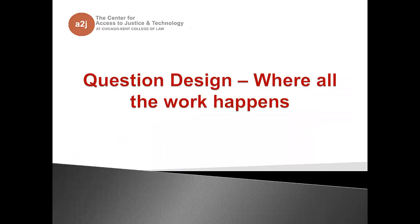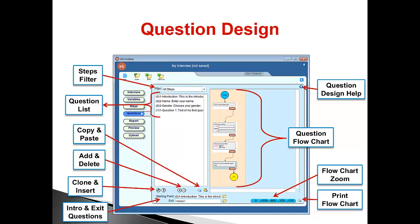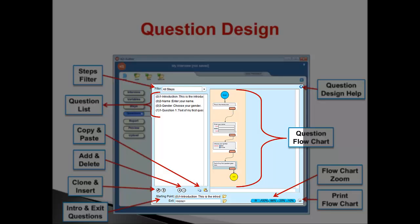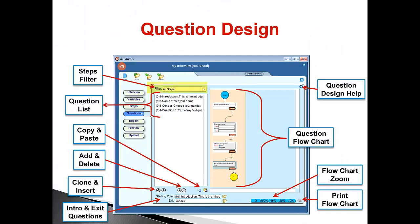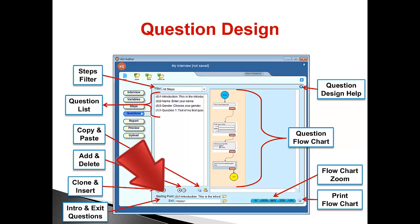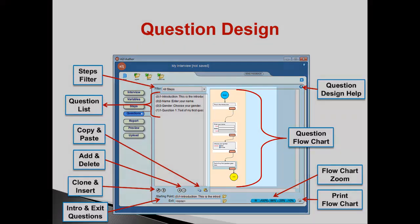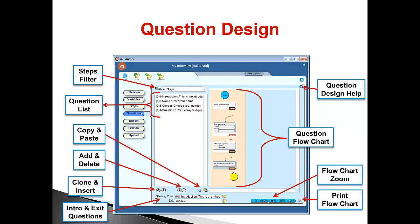The next section in this lesson will focus on the question design window. This is where 99.9% of your work will happen. It's the first screen you'll see when opening your A2J guided interview. Let's focus on the work window. It is the light blue insert next to the navigation tabs. It contains a steps filter, the question list, an ability to copy and paste questions, an ability to add and delete questions, and the ability to clone and insert questions. It also lets you set a starting point question and an exit point question. The exit point question should only be used when you are enabling save and resume in A2J Author. Otherwise none is the appropriate option. There also is the question design help which will take you to that authoring guide I mentioned before.